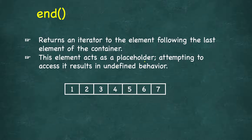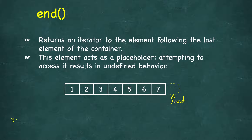end returns an iterator to the element following the last element. If 7 is the last element, assume there is an imaginary element after it which is not actually in the container — end returns an iterator pointing to that. The way to call it is v.end(). If the container is empty, begin will be equal to end, which indicates an empty container.